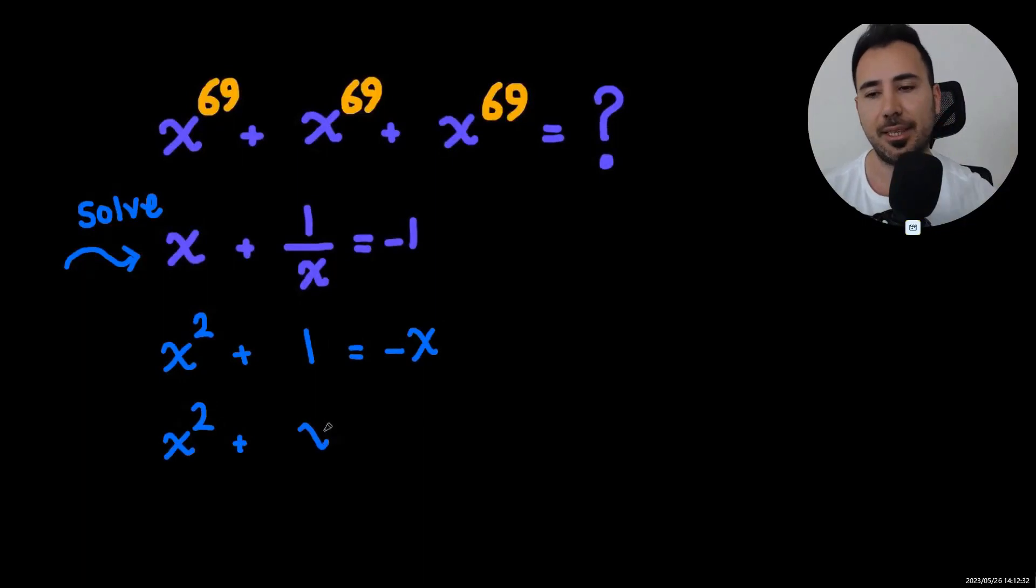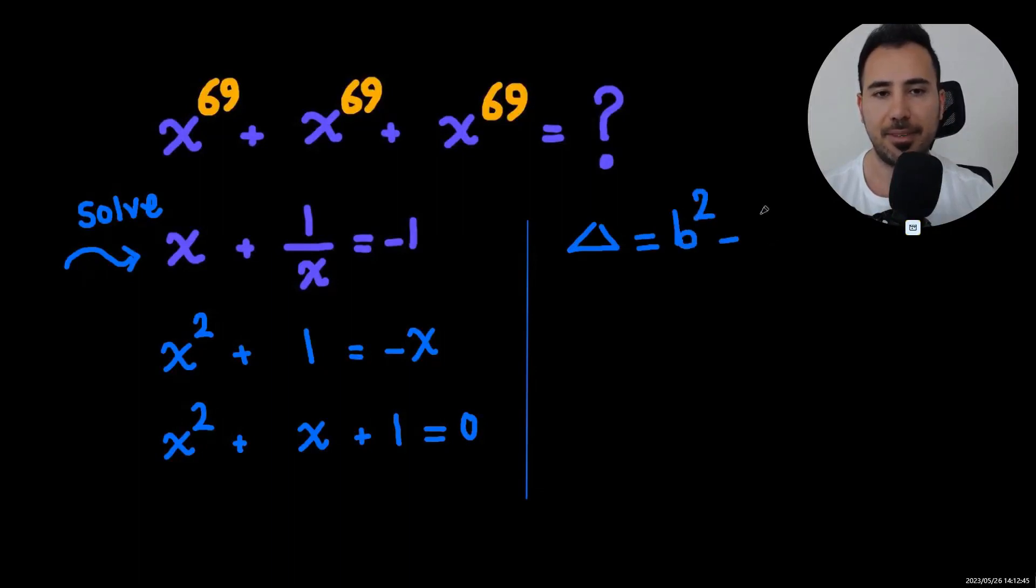Move negative x to the left hand side and we're going to get a quadratic equation, so to solve it let's check the discriminant value b squared minus 4ac.